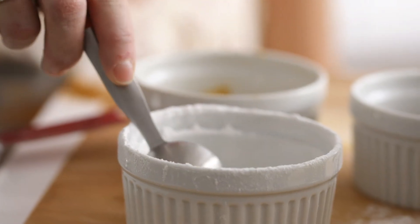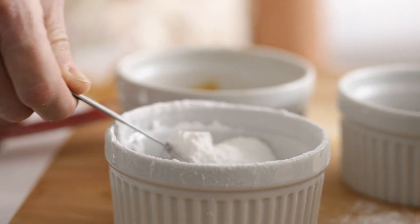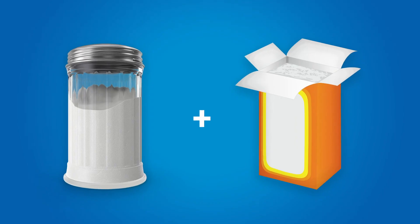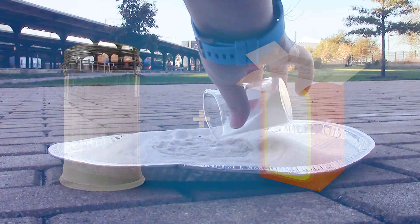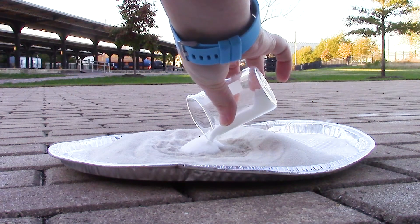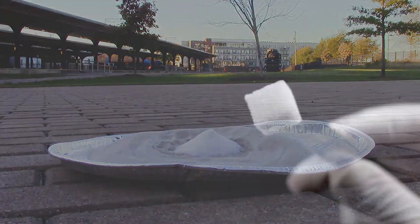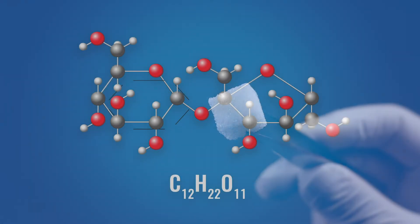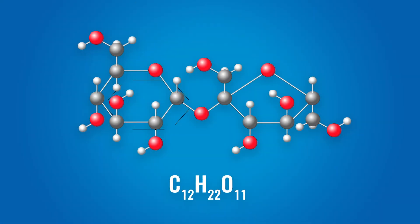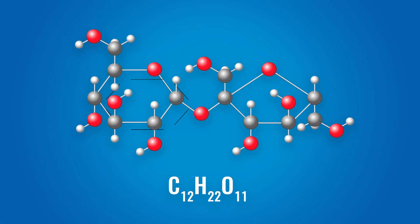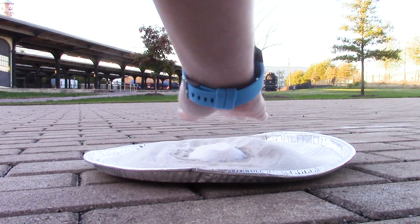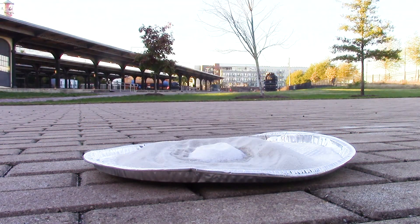I've pre-mixed a mixture of sugar and baking soda. Sugar contains carbon — it has 12 atoms of carbon, 22 atoms of hydrogen, and 11 atoms of oxygen, or C12H22O11. And then baking soda — you guessed it — also contains carbon.